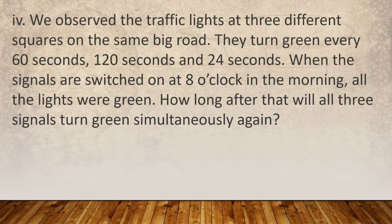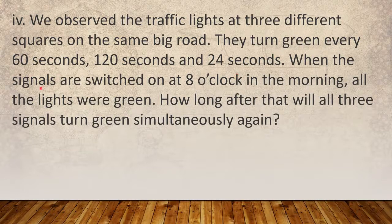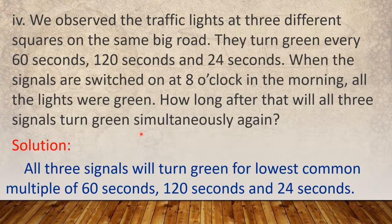Question number 4: We observe the traffic lights at three different squares on the same big road. They turn green every 60 seconds, 120 seconds, and 24 seconds. When the signals are switched on at 8 o'clock in the morning, all the lights were green. How long after that will all the green signals turn green simultaneously again? All three signals will turn green for the lowest common multiple of 60 seconds, 120 seconds, and 24 seconds.